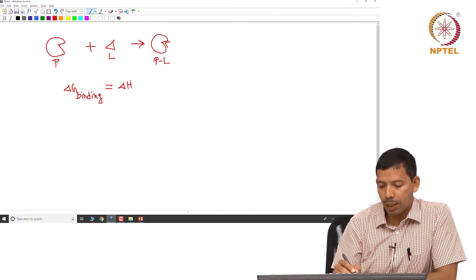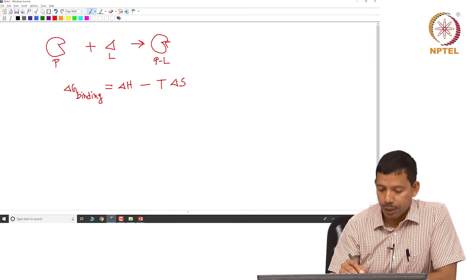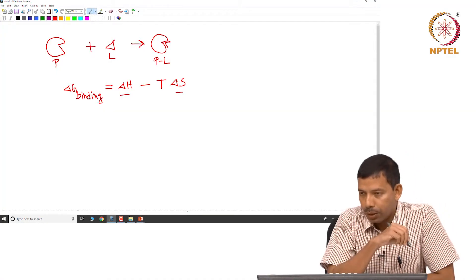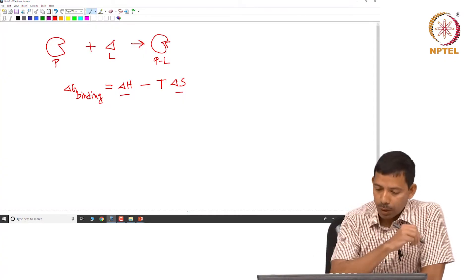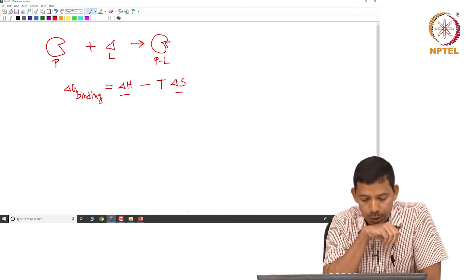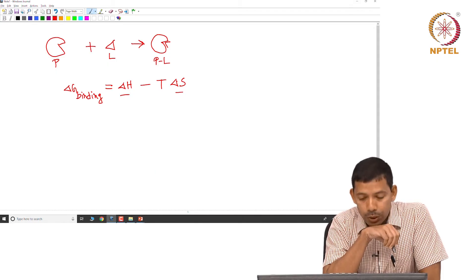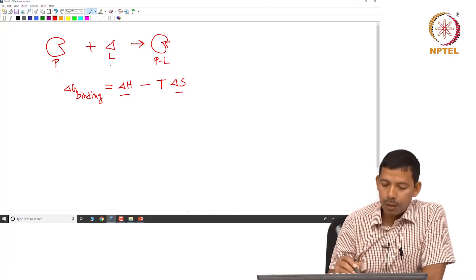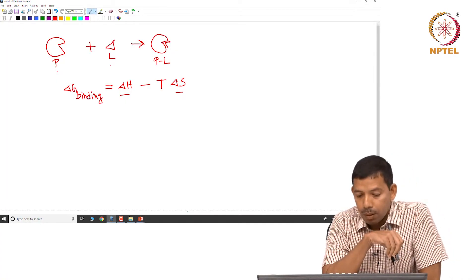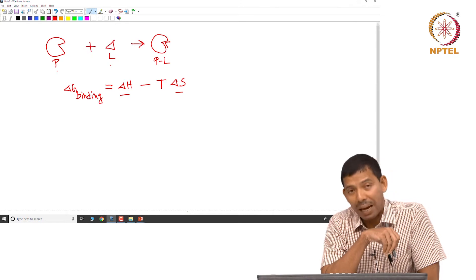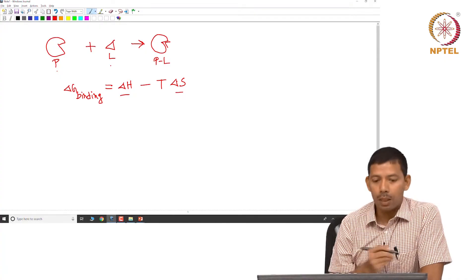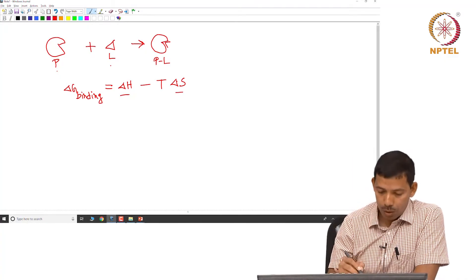The ΔG of binding comes from the thermodynamic expression ΔG = ΔH − TΔS, where ΔH is the change in enthalpy and ΔS is the change in entropy. This thermodynamic relation gives the change in free energy due to binding of the ligand to the protein, but classical thermodynamics does not tell you the magnitude of ΔH or ΔS.